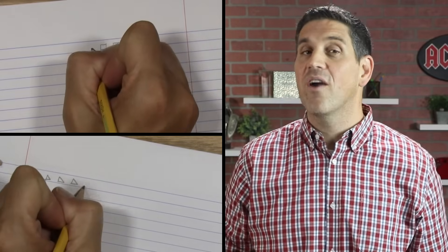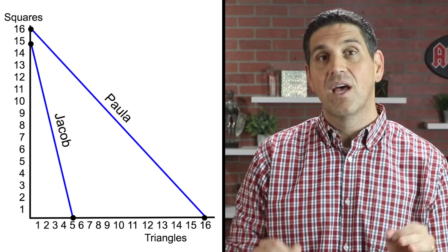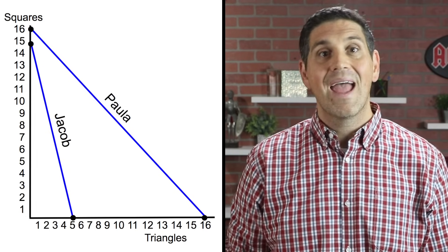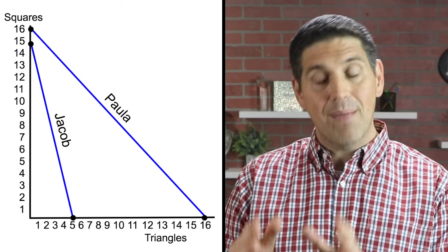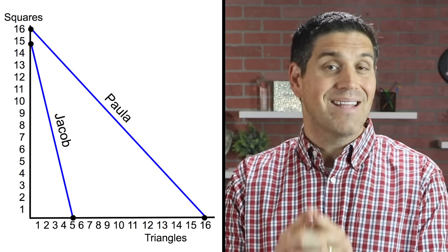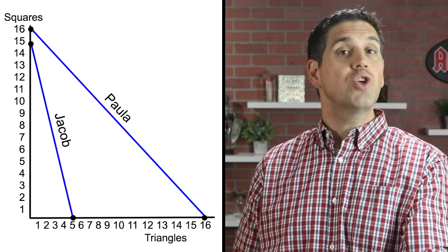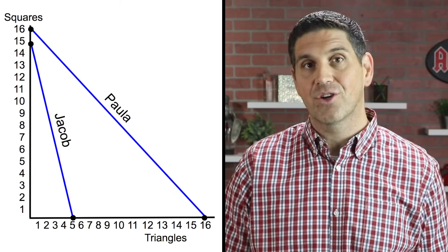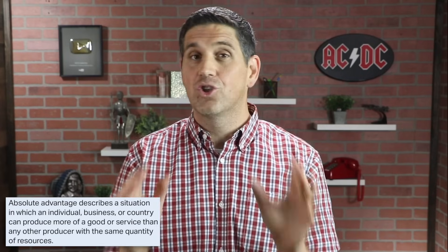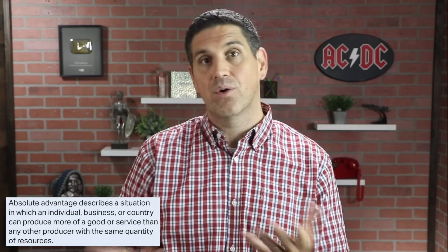But we're talking about trade here. So let's bring in another person producing squares and triangles, except they have different resources. It turns out my wife Paula is ambidextrous — she can write with both hands. In 10 seconds, she was able to draw 16 right-handed squares and 16 left-handed triangles. She can produce more squares than I can in the same 10 seconds, so she has an absolute advantage in squares. And she can also produce more triangles in 10 seconds than I can, so she has an absolute advantage in triangles too. Absolute advantage is super easy — just figure out who's better at producing each good or service.